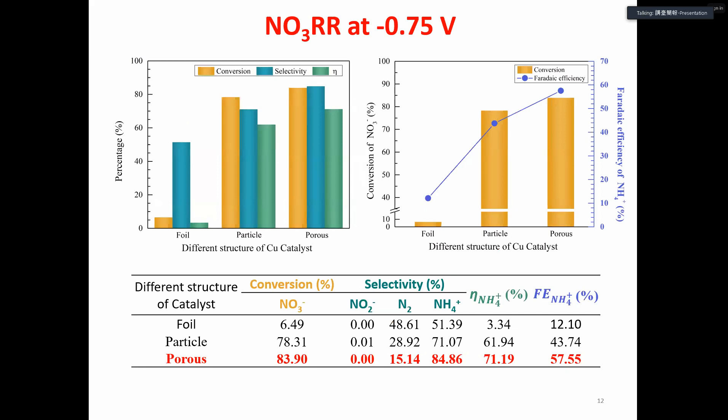Then we used the same condition to test the performance of the copper foil and copper particle. From both figures and table, we can see that the copper porous catalyst has the highest nitrate conversion, selectivity, ammonium yield, and Faraday efficiency.